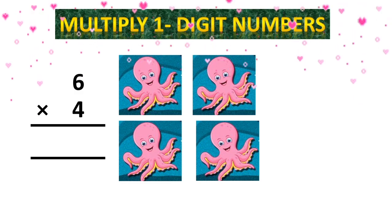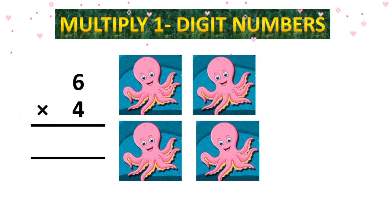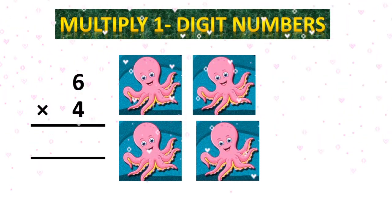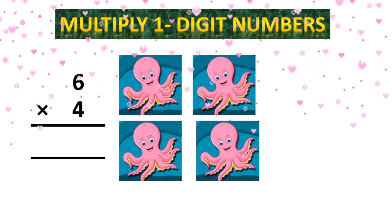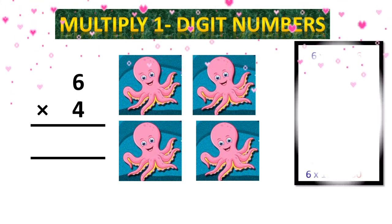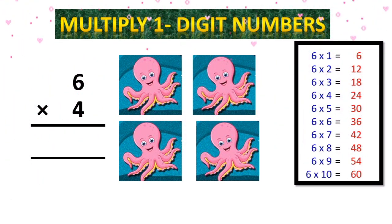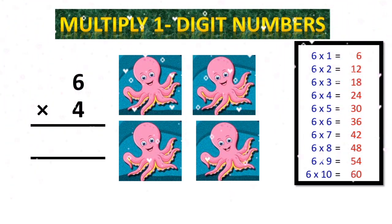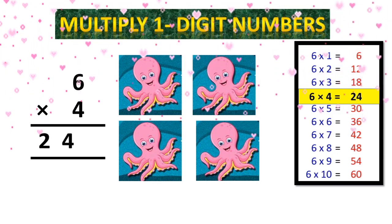Yes, bita, it is your next one. Times table of 6 — aapne kitne times padhna hai? 4 times padhna hai. Because you know 1 octopus has 6 legs. 1 octopus ke paas 6 legs hai, aur aapke paas yahan par 4 octopuses hain. 6 ones are 6, 6 twos are 12, 6 threes are 18, and 6 fours are 24.